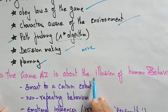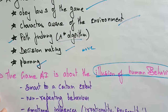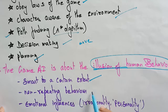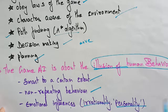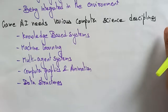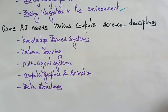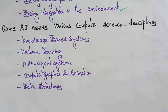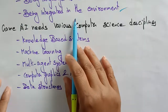Game AI is about the illusion of human behavior — not the exact human behavior, just an illusion of it. It is smart to a certain extent, has non-repeating behavior, and emotional influences like irrational reactions and personality. It also uses body language to communicate emotions, being integrated in the environment. So the AI communicates those emotions to the user playing opposite to it.